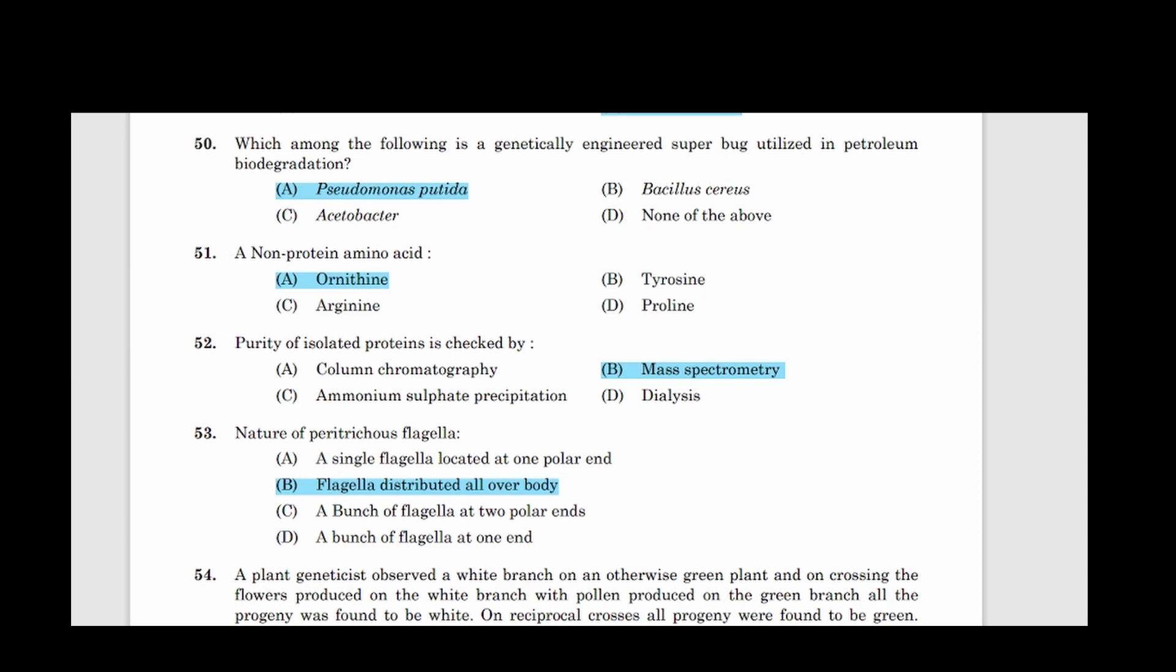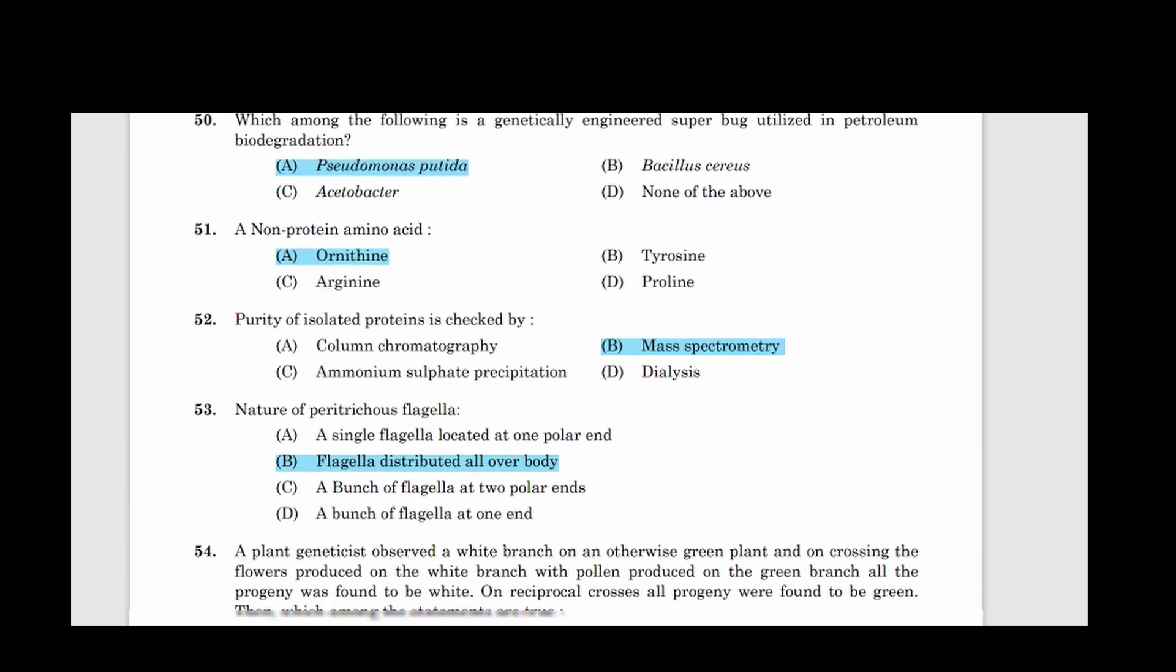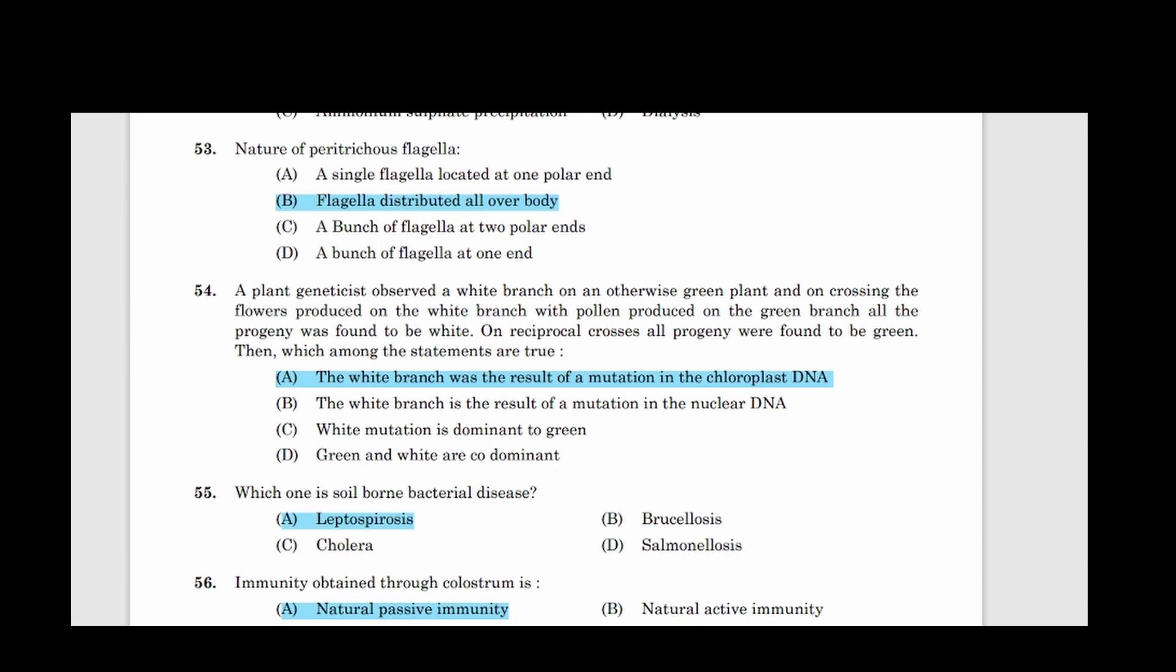52: Purity of isolated proteins is checked by. Option B, Mass spectrometry. 53: Nature of peritrichous flagella. Correct answer option B, Flagella distributed all over the body. 54: A plant geneticist observed a white branch on an otherwise green plant and on crossing the flowers produced on the white branch with pollen produced on the green branch, all the progeny was found to be white. On reciprocal crosses, all progeny were found to be green. Then which among the statements are true? Correct answer option A, The white branch was the result of a mutation in the chloroplast DNA.